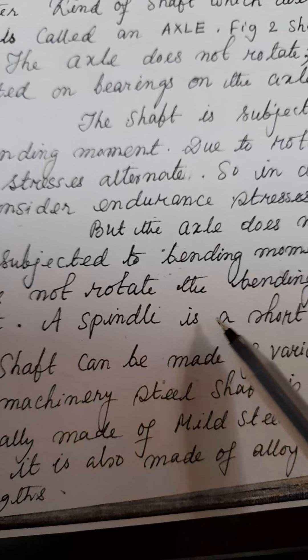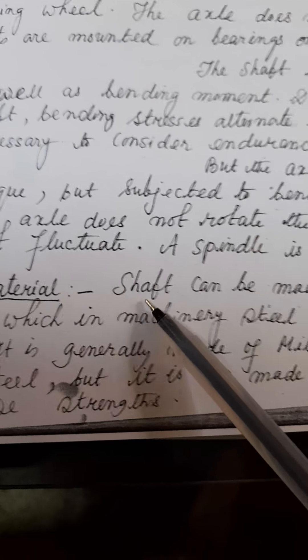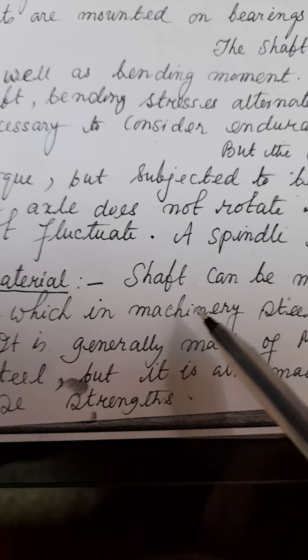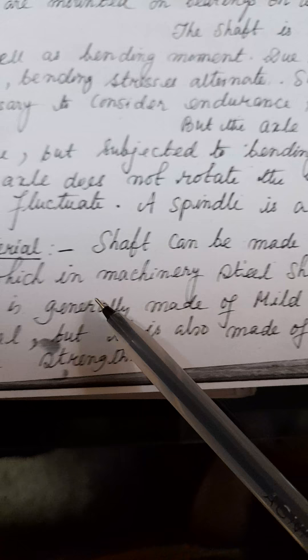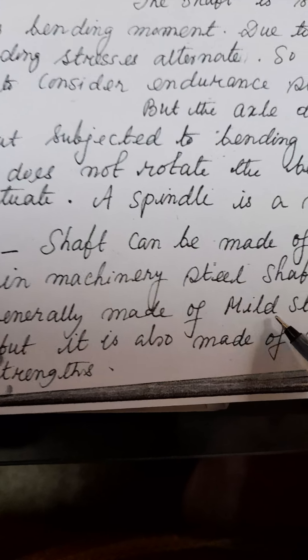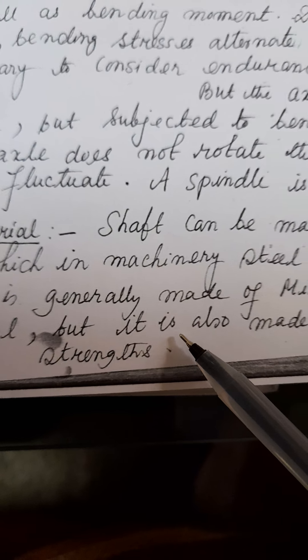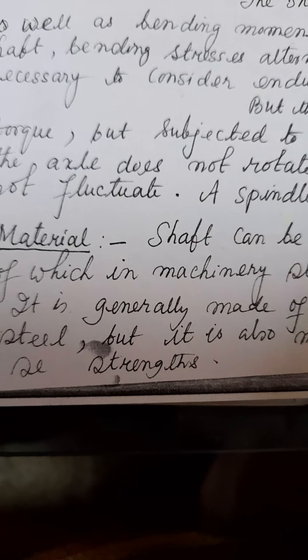A spindle is a short shaft. The shaft can be made of various materials, of which in machinery, steel shaft is most common. It is generally made of mild steel or medium carbon steel, but it is also made of alloy steel to increase the strength.